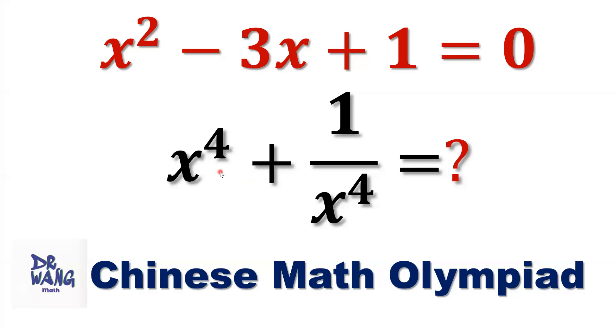The second method, maybe you want to divide this equation by x on both sides of this equation. You will have x plus 1 over x equals 3. Then use this result to derive this result.